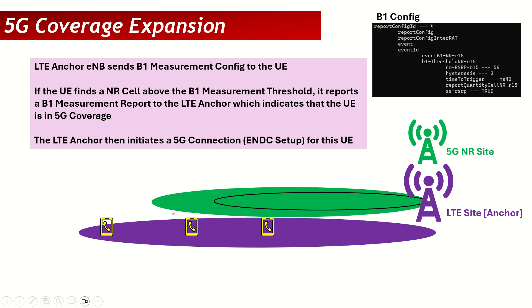What this means is that these mobiles will measure the 5G RSRP, and if the RSRP of the 5G cell is above -100 dBm, these mobiles will send a measurement report to the LTE anchor indicating that this mobile is within the 5G coverage. If a mobile measures the 5G RSRP and it is, say, -130 dBm, that is much lower than the B1 threshold, so it will not send any B1 measurement report to the LTE anchor.